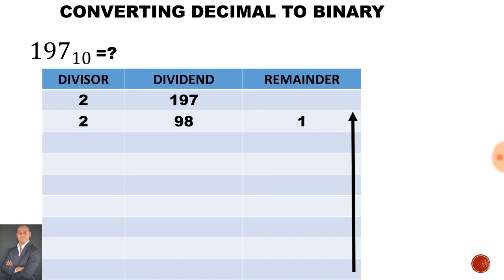Once again our divisor is 2. 2 will go into 98 49 times remainder 0. If I want to double check my answer I can say 49 times 2 is equal to 98.